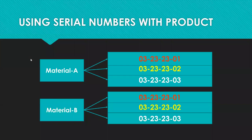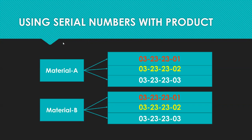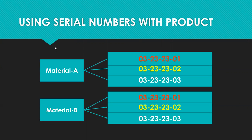To give an example — comparing with the handling unit number, which is a unique identification number throughout the warehouse — here the combination of material and serial number is unique. You can use the same serial number for a different material, so it's unique to the combination of that material. You can reuse a serial number for a different product, but not for the same product.